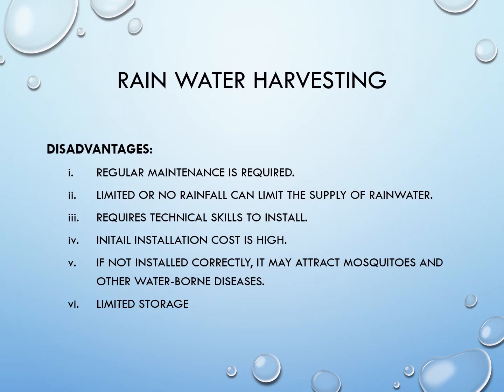Disadvantages of rainwater harvesting: it requires regular maintenance, limited or no rainfall can limit the supply of rain water, requires technical skill to install, initial installation cost is high, if not installed correctly it may attract mosquitoes and other waterborne diseases, and it has limited storage.